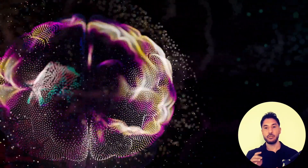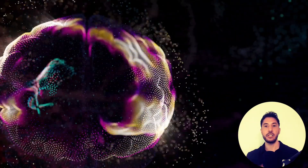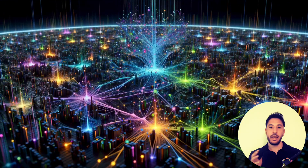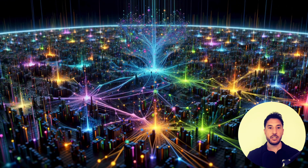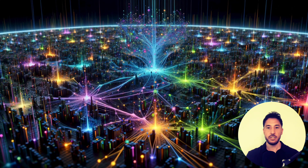Each synapse in our brain allows for the passage of electrical or chemical signals between neurons, facilitating learning and memory by strengthening or weakening connections based on our experiences. Similarly, in an AI model, parameters are adjusted during training to minimize errors in predictions or generation — effectively learning from the data the model is exposed to.